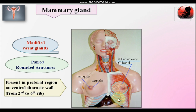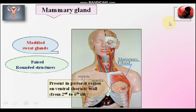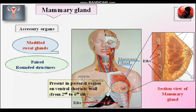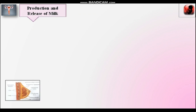In the pectoral region, we know there is a thoracic cage made up of 12 pairs of ribs. In front there is the sternum bone, and on the back side there are 12 thoracic vertebrae. The mammary gland extends from the second to the sixth rib. Here is the location of the mammary gland — the sectional view shows the second, third, fourth, fifth, and sixth ribs. The function of these mammary glands is to produce and release milk.